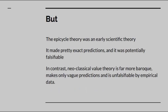The epicycle theory was an early scientific theory. It made pretty exact predictions and, this is an important point, it was also potentially falsifiable. In contrast I will show that neoclassical value theory is far more Baroque. We can say quantifiably how more Baroque it is. It makes only vague predictions and it is unfalsifiable by any conceivable empirical data.